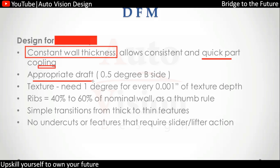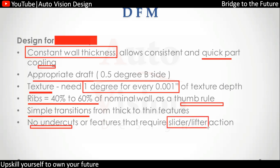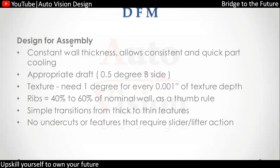For draft angles, Class A requires 3 degrees and Class B requires 0.4 degrees. If there is a grain or texture pattern, the rule is 1 degree per 0.001 inches depth. For rib thickness, the thumb rule is 40 to 60 percent of the nominal wall thickness side feature, based on toolmaker and OEM experience. For transitions from thick to thin sections, they must be uniform. If there is an undercut, we check for slider and lifter requirements, calculating the travel to ensure there are no issues. This is how we check for plastic components in Design for Manufacturing.